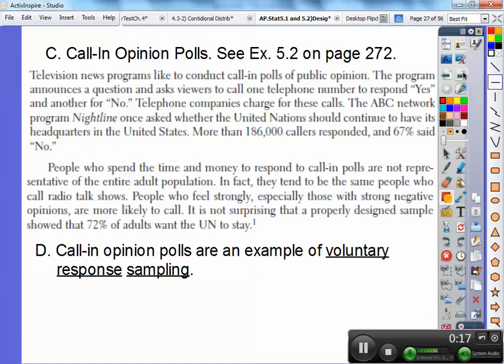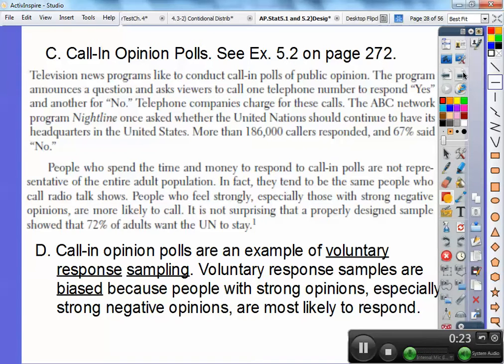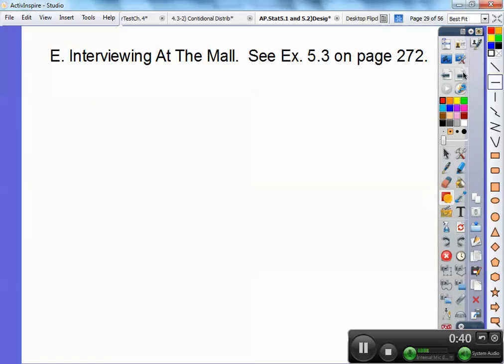Call-in opinion polls are an example of voluntary response sampling. Voluntary response samples are biased because people with strong opinions, especially strong negative opinions, are most likely to respond. Like the restaurant suggestion box I was talking about in the last video. Alright, so here's Section E.